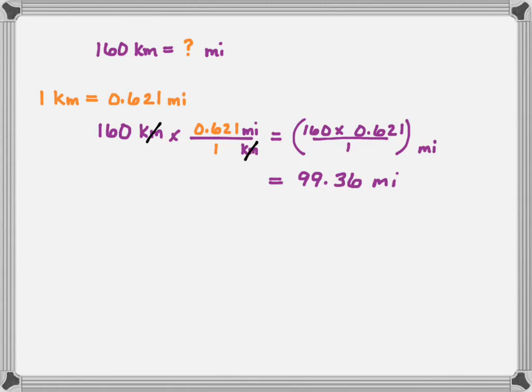I have 160 times 0.621 divided by 1, and the units are miles. My calculator gives me an answer of 99.36 miles. My original number was in 3 significant figures, so I need 3 significant figures in my answer, which would be 99.3. I look at the digit following the 3, which is 6 — greater than 5 — so I round my 3 up to 4, giving me an answer of 99.4 miles. So 160 kilometers is equal to 99.4 miles. This concludes the lesson on unit conversion.